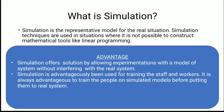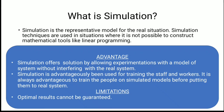Now let us see one general limitation of simulation. In simulation, optimal results cannot be guaranteed. This means that simulation gives approximated results, which is why optimality is not guaranteed.